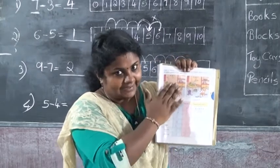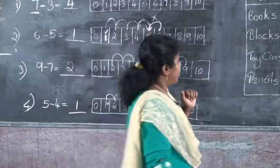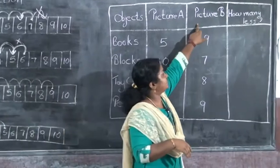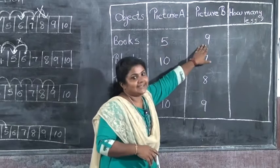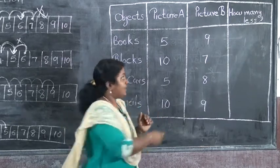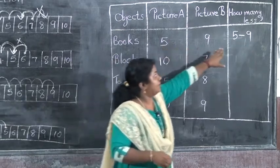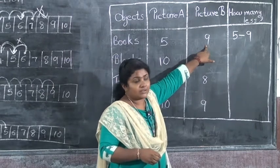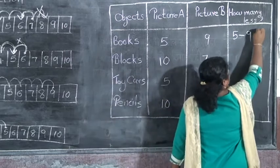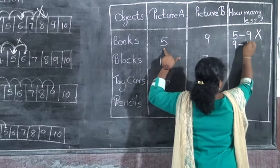Count the objects in Picture A, then count them in Picture B. The third step, we have to subtract. For example, the first object is books. In Picture A we can see 5 books, and in Picture B we can see 9 books. The numbers are different — which is less? Can I write 5 minus 9? No, why? Because we have to write the big number first. Which is the biggest number here? That is 9. So write 9 first: 9 minus 5.